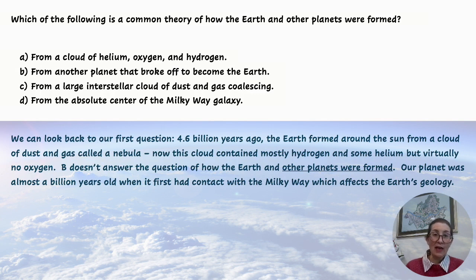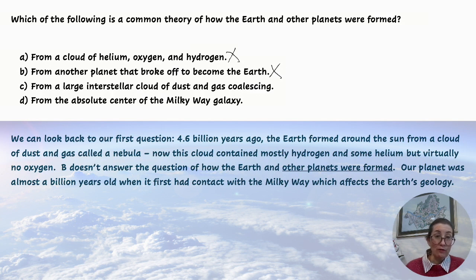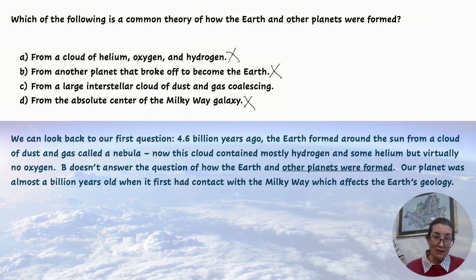We can look back to our first question — part of the answer was that 4.6 billion years ago, the Earth formed around the Sun from a cloud of dust called a nebula. This cloud of dust contained mostly hydrogen, some helium, but virtually no oxygen, so that discounts A. B doesn't answer the question of how the Earth and other planets were formed, so we can cross that off as well. Our planet was almost a billion years old when it first had contact with the Milky Way, so D is definitely not the answer. From the beginning, we said it formed around the Sun from a cloud of dust and gas — therefore, C is the correct answer.